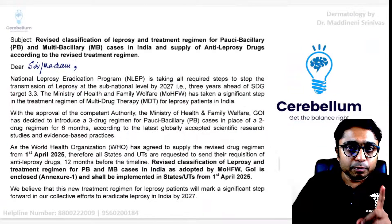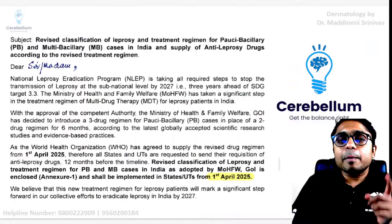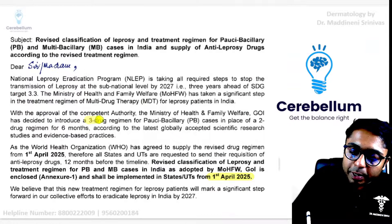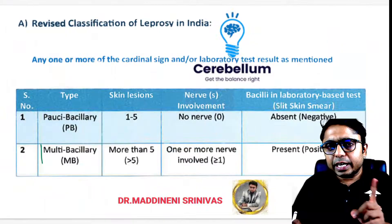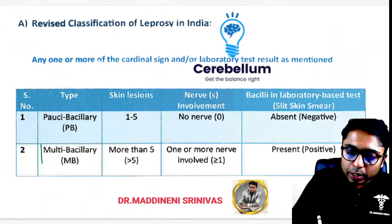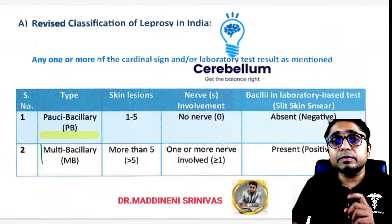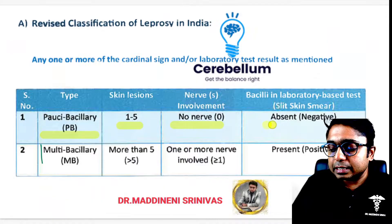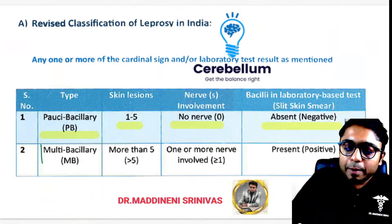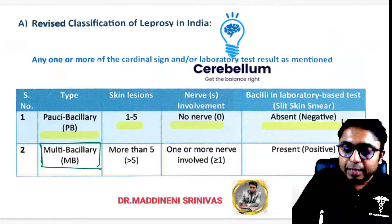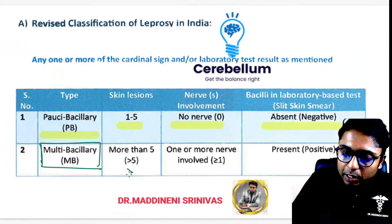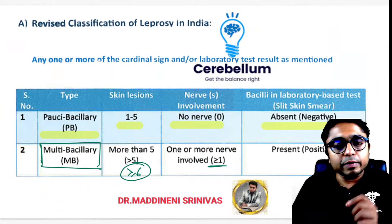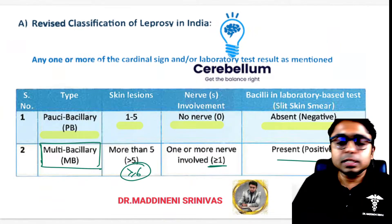The important update is from 1st of April 2025: paucibacillary patients are also going to get treatment with a three-drug regimen, and the classification is also slightly changed. We will now call a patient paucibacillary if there are one to five skin lesions, no nerve involvement, and slit skin smear (SSS) is negative. A patient is multibacillary if there are six or more skin lesions, one or more nerves involved, and SSS is positive.